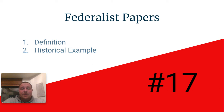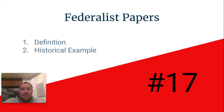The Federalists began to publish a series of essays and pamphlets in local newspapers all over the country, because at that time, that was the easiest way to communicate their message to large audiences.